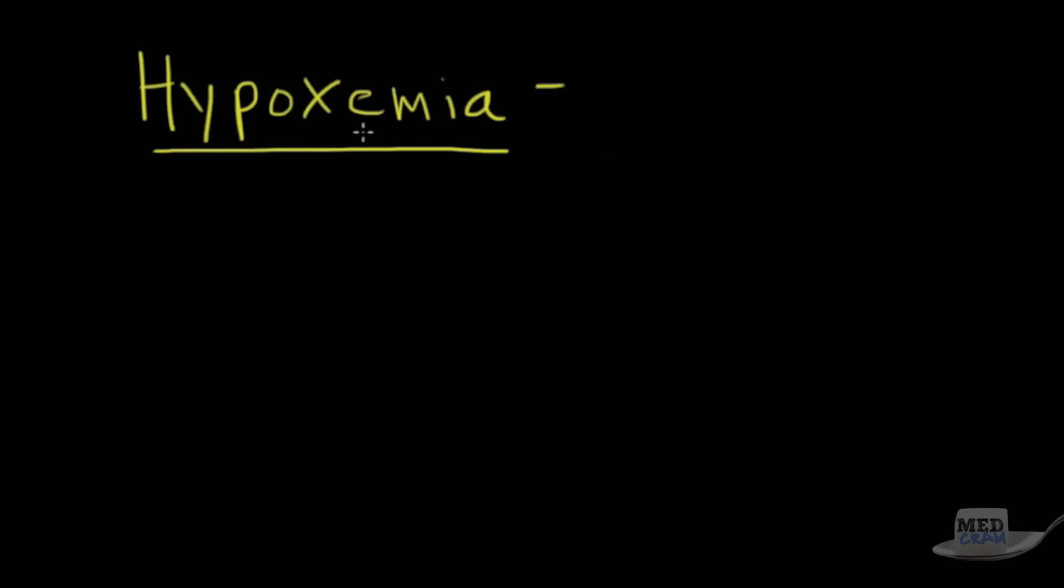Anything with the ending of -emia is going to be something related to the blood. So hyponatremia, hypokalemia, hypercalcemia - it's referring to the amount in the blood. This is as opposed to the term hypoxia. The difference here is hypoxia has to do with the amount of oxygen in the cells. That's the target area. But how the oxygen gets to those cells is in the blood, and that's what we're going to talk about today.